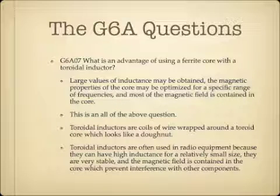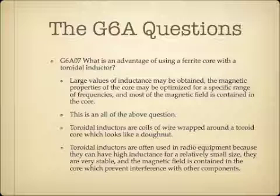What is an advantage of using a ferrite core with a toroidal inductor? The answer is all of the above: large values of inductance may be obtained; the magnetic properties of the core may be optimized for a specific range of frequencies; and most of the magnetic field is contained in the core. Toroidal inductors are basically coils of wire wrapped around a toroid core, which looks like a little metal donut. They're often used in radio equipment because they can have high inductance for a relatively small size, are very stable, and the magnetic field is contained inside the core, which prevents interference with other components.